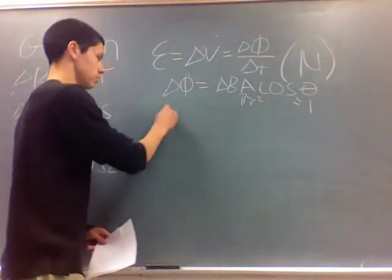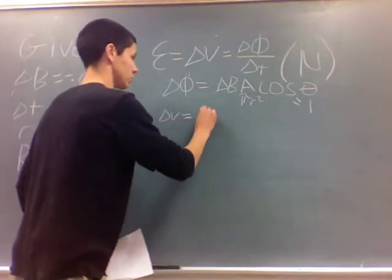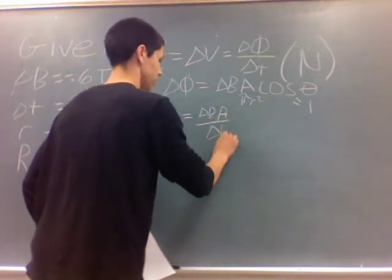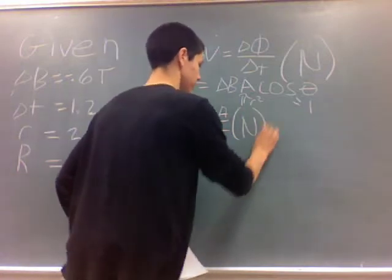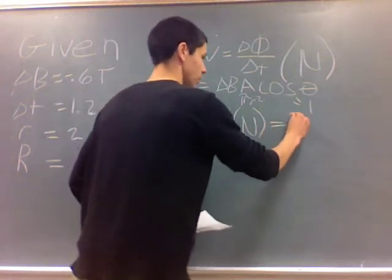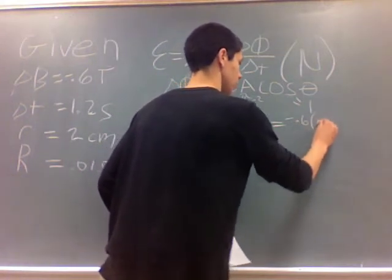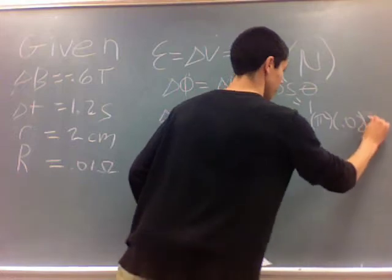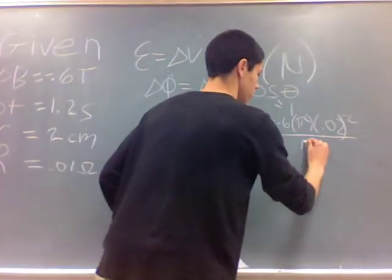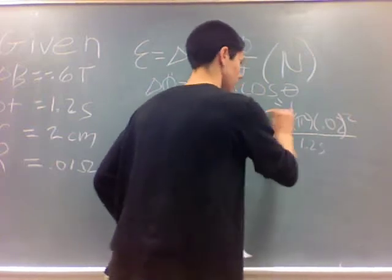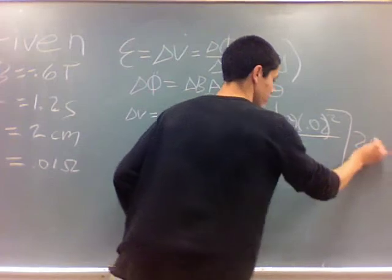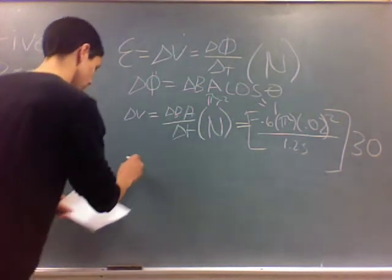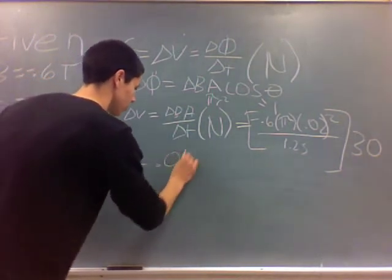So we can now substitute this in. Delta V equals the change of B times the area over the change of time times the number of turns. Now plugging in our numbers, we get negative 0.6 times pi times 0.02 squared over 1.2 seconds, and all of that times 30, which is the number of turns. So after multiplying all this together, we get a voltage of 0.019 volts.